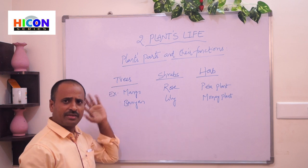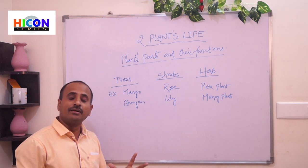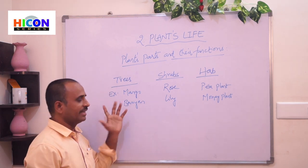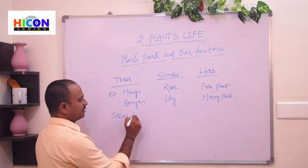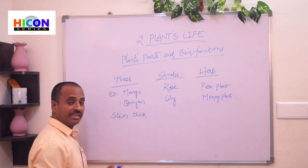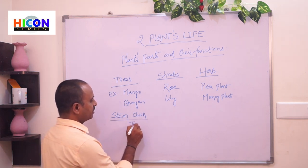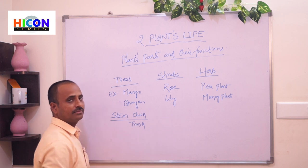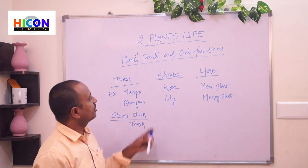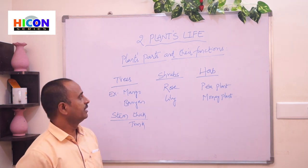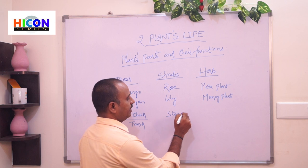Some plants are very big and have a lot of branches and leaves — those big plants are called trees. These trees have a stem that is very thick, woody, and strong. Some plants are very small — those small plants are called shrubs. Examples are rose and lily, and these plants have a stem that is thin but strong.